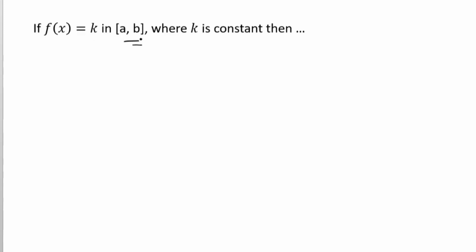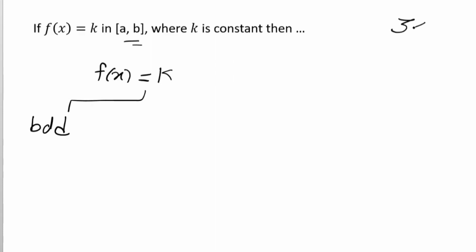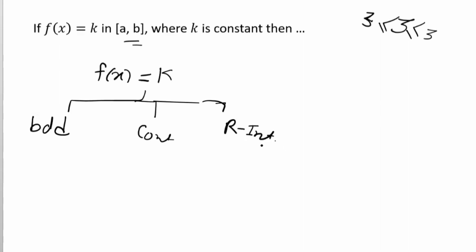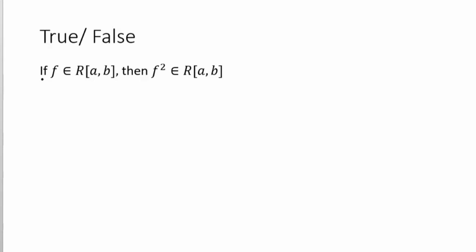The next question: if f(x) = k on the closed interval [a, b], where k is a constant, then this constant function is bounded — for example if k = 3, it satisfies the bound condition — and it is continuous. Therefore it is Riemann integrable. A constant function always satisfies the conditions of Riemann integrability on a closed interval [a, b].